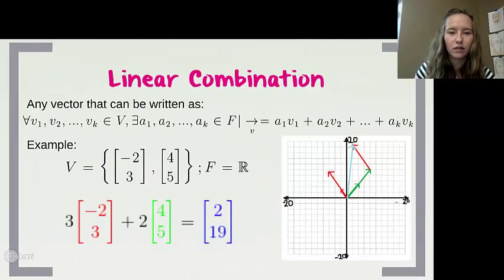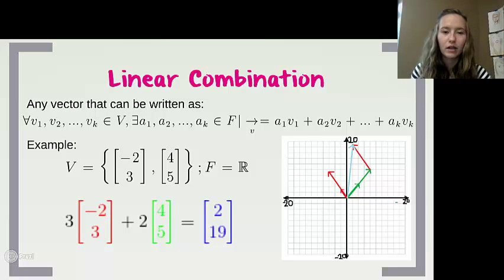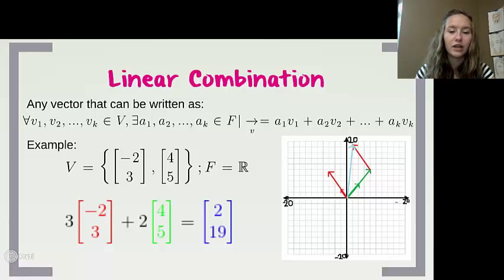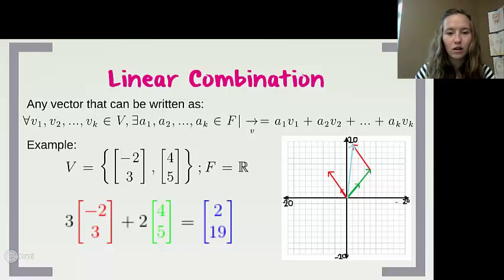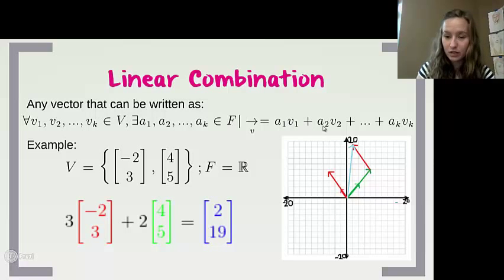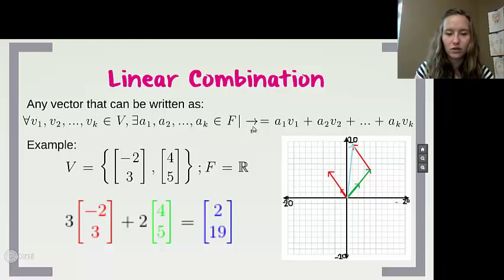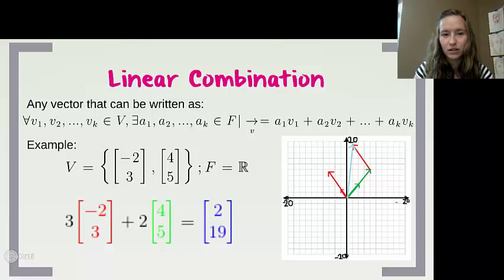Now that we know those things, we can move on to linear combination. We need to understand linear combination in order to understand basis and therefore understand dimension. A linear combination is any vector that can be written using all elements of our vector space and some elements of our field — written as a₁v₁ + a₂v₂ + … + aₖvₖ — and this gives us a new vector. You must use all of the vectors in your set.